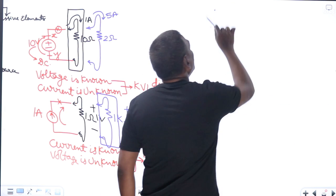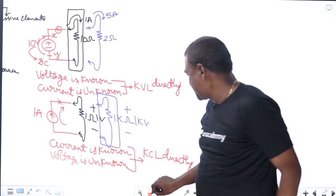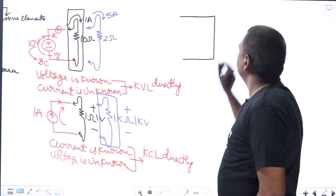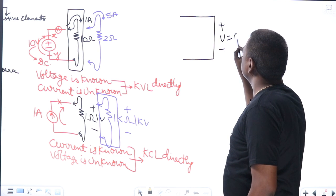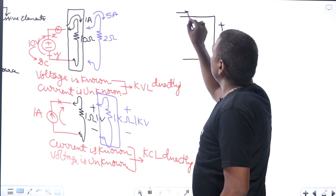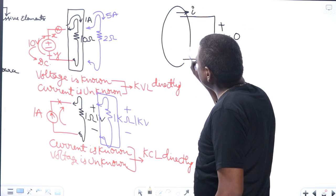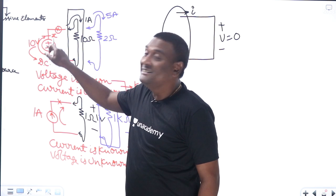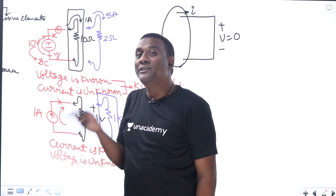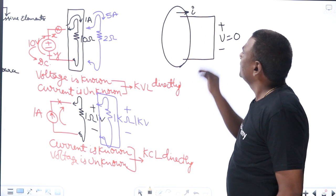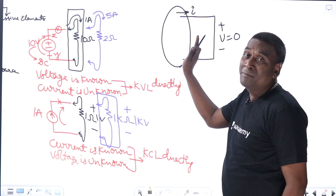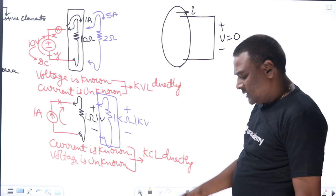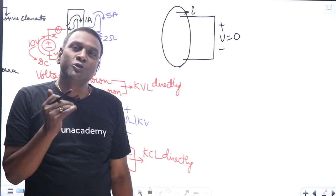Now, what is a short circuit? In a short circuit, the voltage across it is 0 volts. How much current will flow is decided by the connected system. Compare this to a voltage source: for a voltage source, voltage is specified and constant, while current varies depending on the connected system.